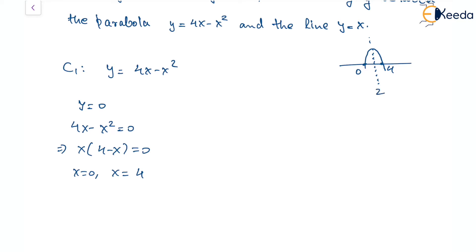If you want to find the value at this point, that is also possible by putting x = 2. Although it's not required here, but if you have to find it, y at 2 will be 4 times 2 minus 2 squared. That is 4. That means this has to be 4.